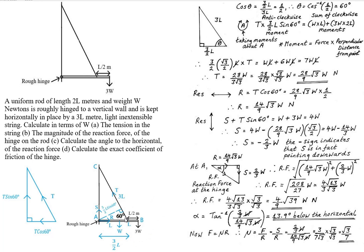The next thing to do is find the angle that the light inextensible string makes with the horizontal rod. This can be done by forming a right-angle triangle and finding angle theta. cos θ equals the adjacent, which is 3/2 L, over the hypotenuse, which is 3L. The L's cancel to give cos θ = 1/2. So theta equals the inverse cos of a half, which works out to be 60 degrees.